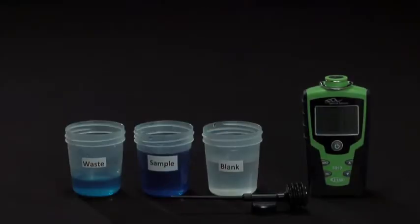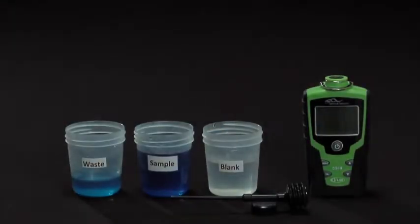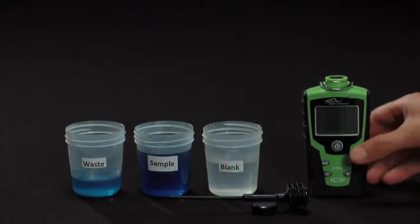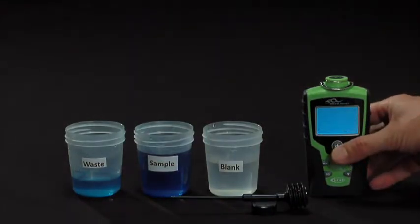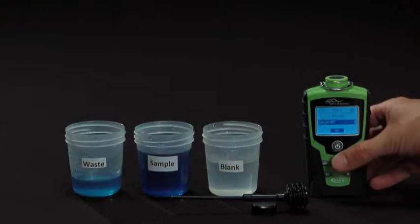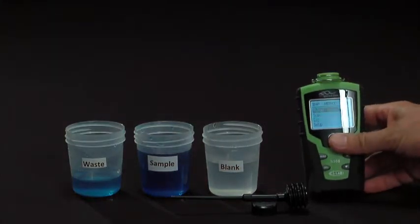This video will demonstrate the proper technique for obtaining a sample using the Samplet with the iLab. The first step will be to turn the iLab on using the center button, then press the menu button and scroll and select the methods folder.